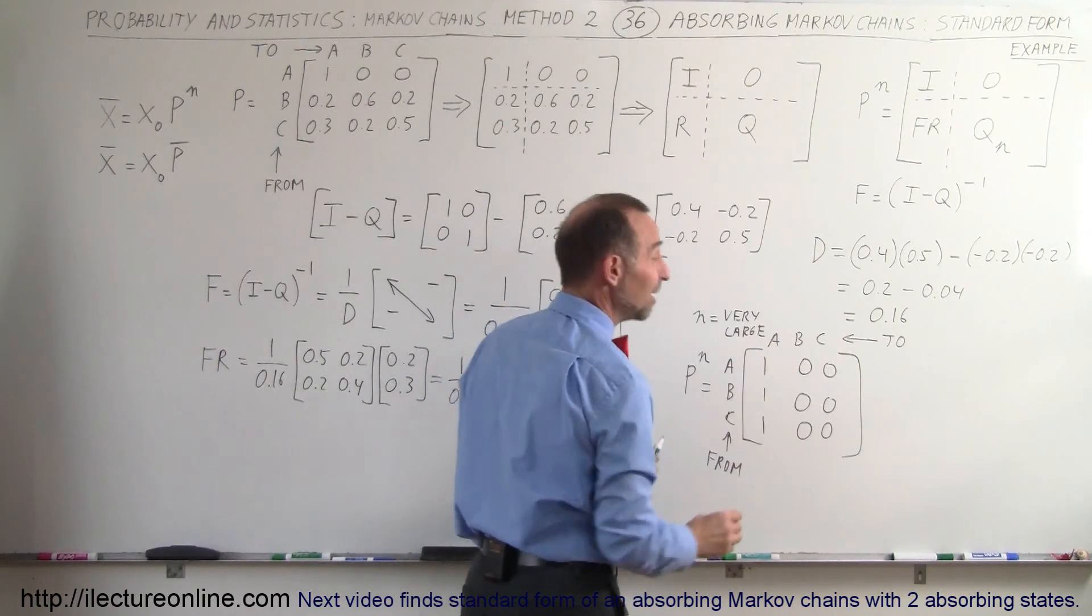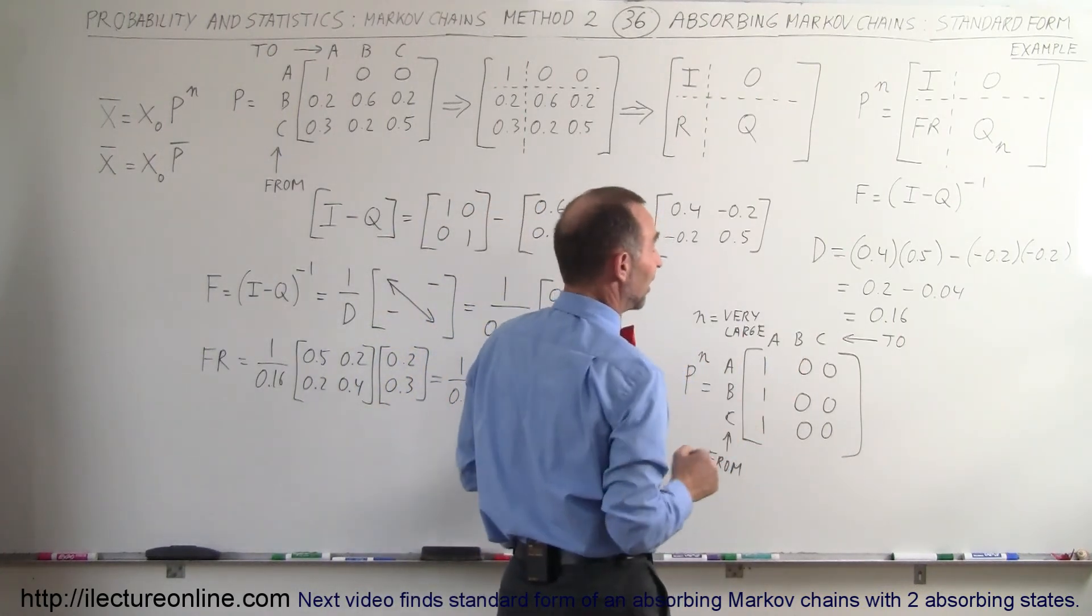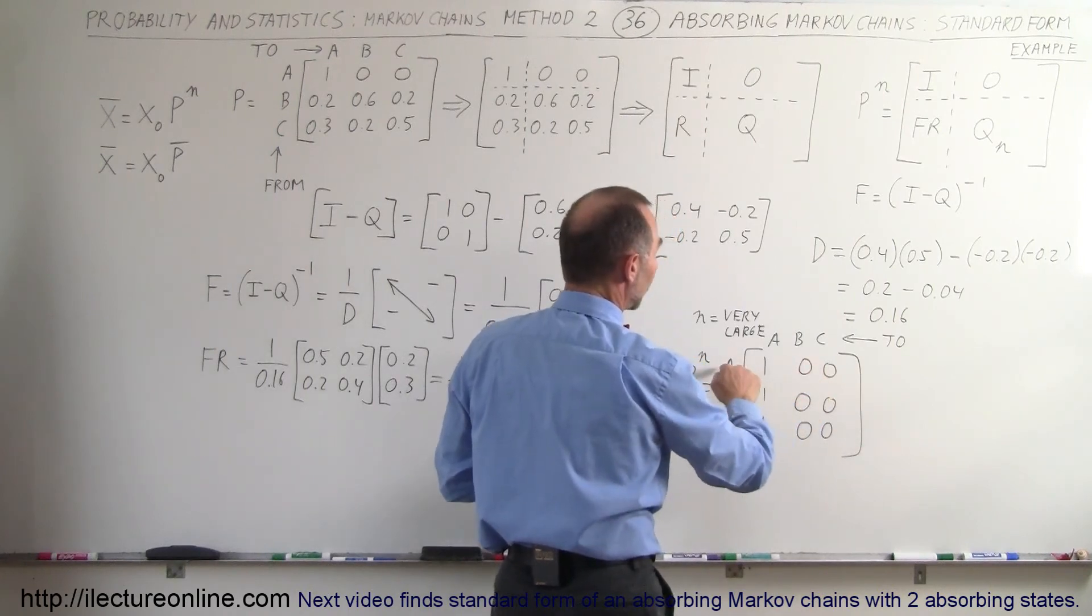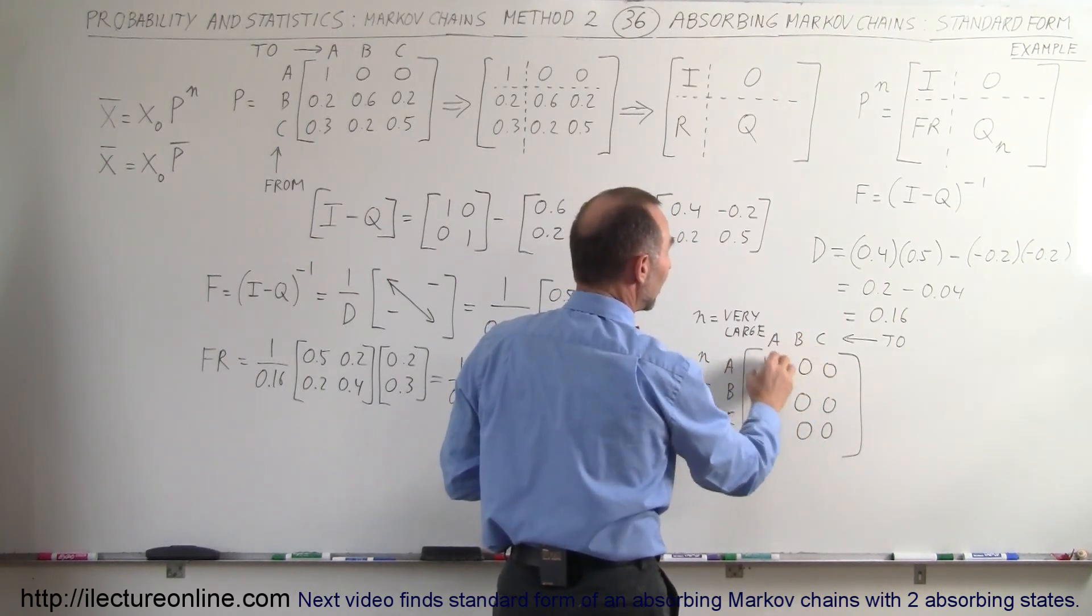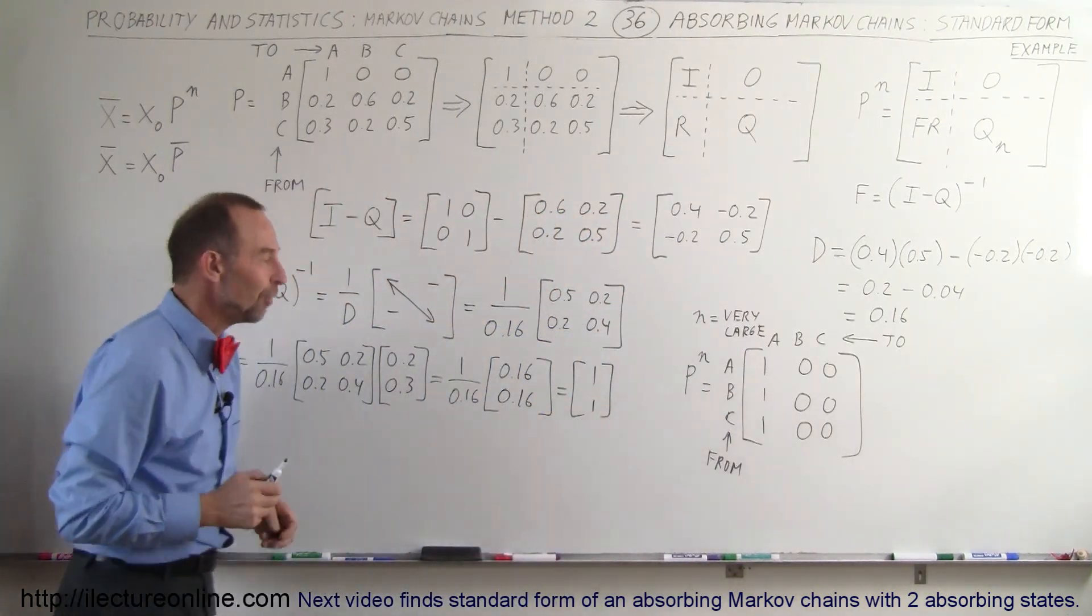And notice there's no transition between B and C and no transition from A to B or A to C, which means A will end up with 100% of all the customers.